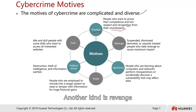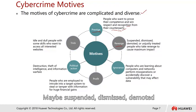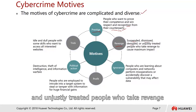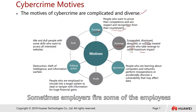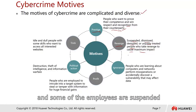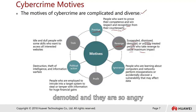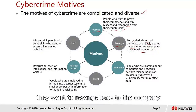Another motive is revenge — suspended, dismissed, or demoted people who are unjustly treated take revenge to cause maximum impact. For example, an employer fires an employee, and the employee is so angry they want to take revenge on the company.